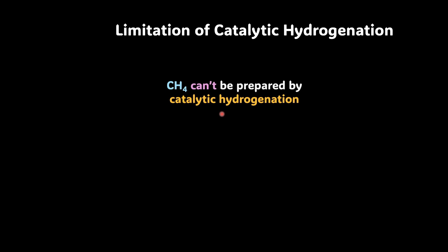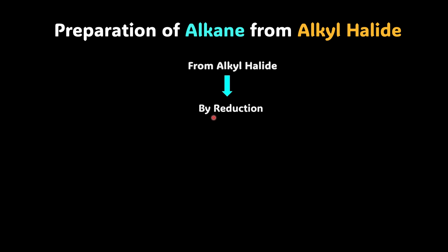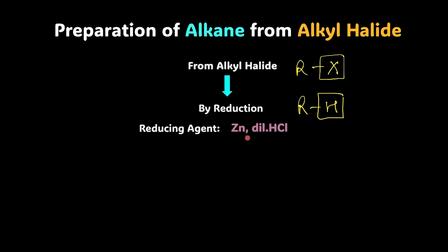So let's try to know more methods of preparation of alkanes. Let's make use of alkyl halides. We can take an alkyl halide and treat it with zinc in the presence of dilute hydrochloric acid, or we can add sodium in the presence of dry ether. Let's start with the first one — zinc in the presence of dilute hydrochloric acid. You're carrying out reduction here, because we are just removing this electronegative element and replacing it with hydrogen. The reducing agent we use here is zinc with dilute hydrochloric acid.